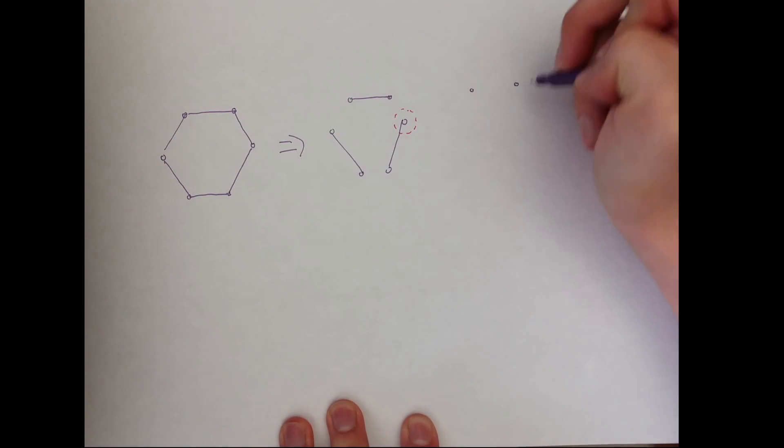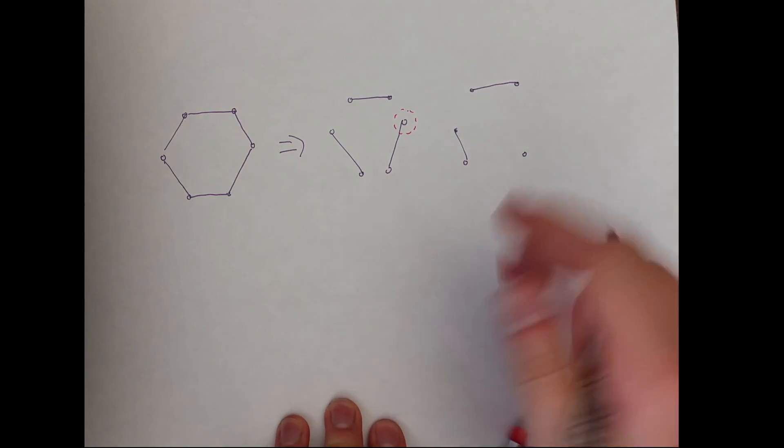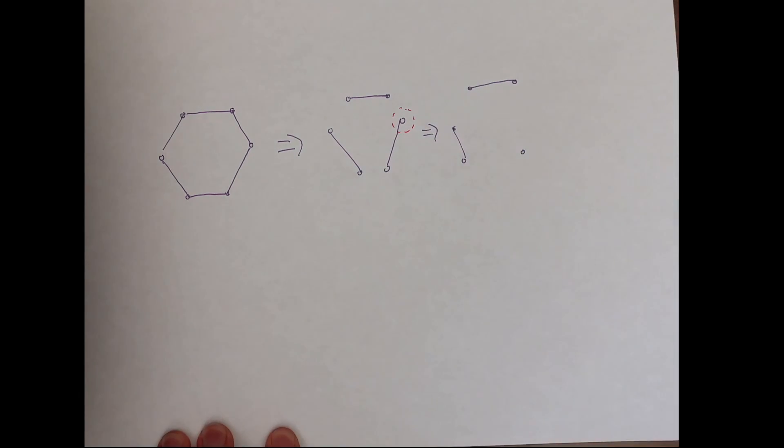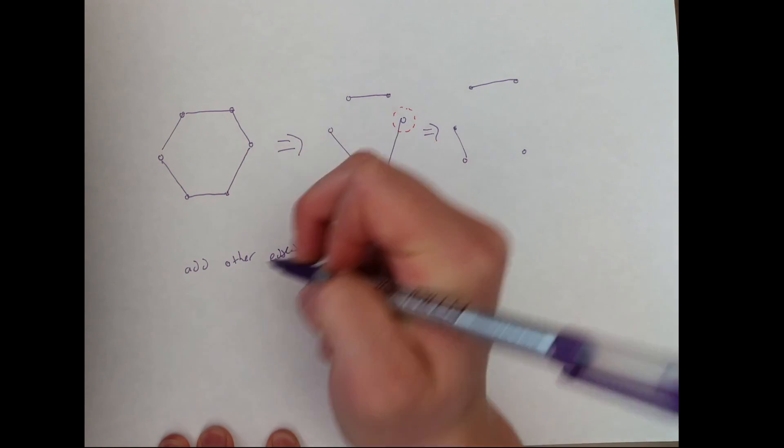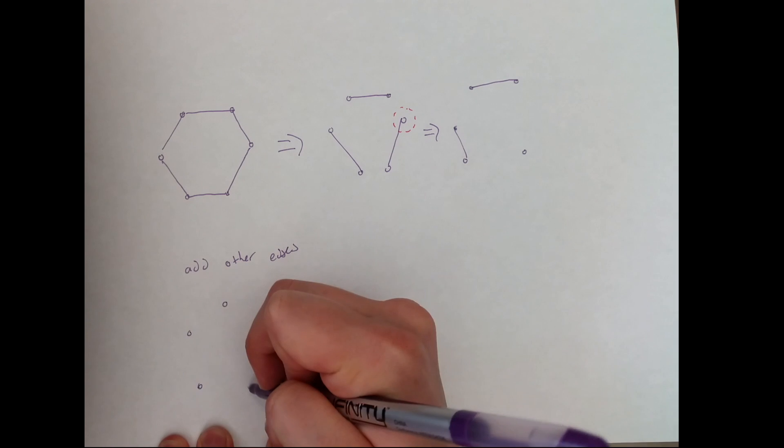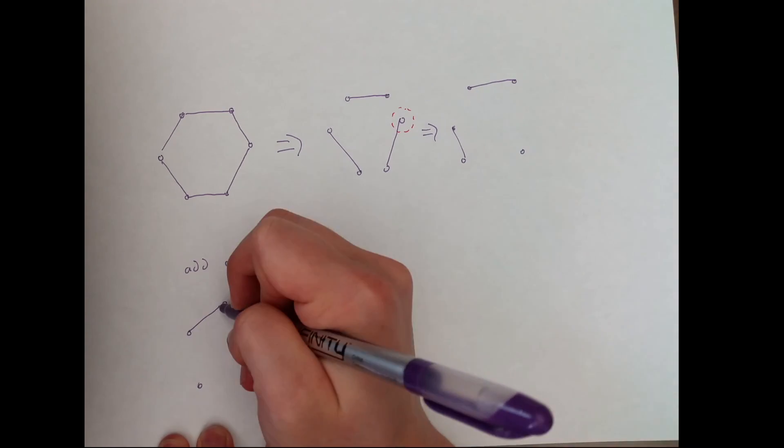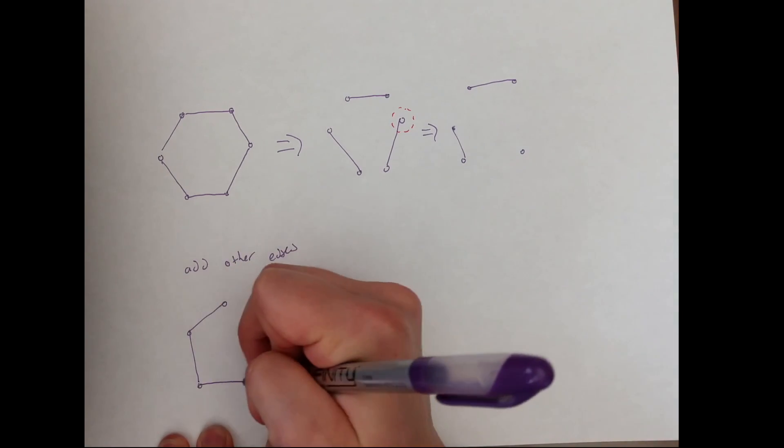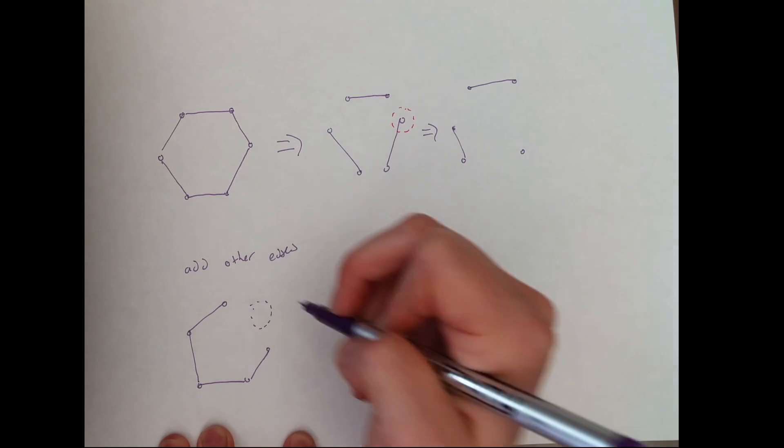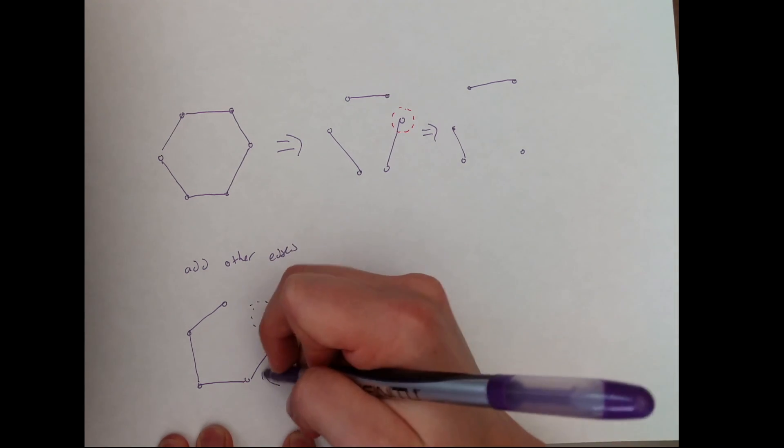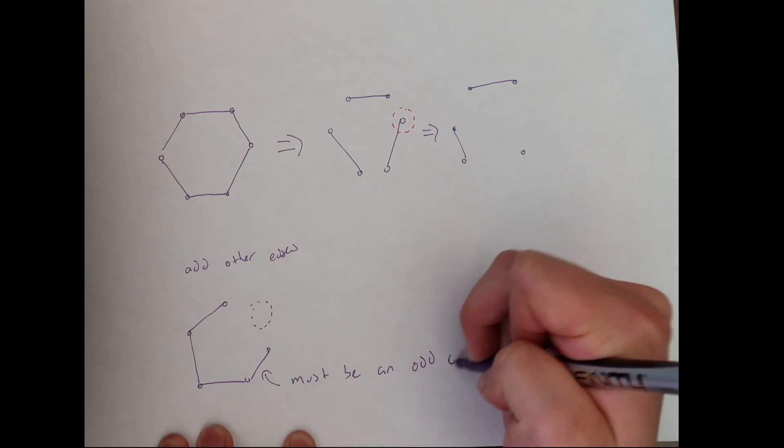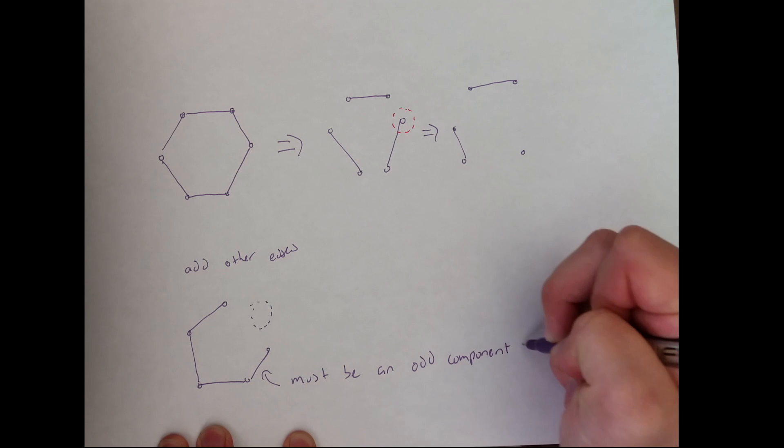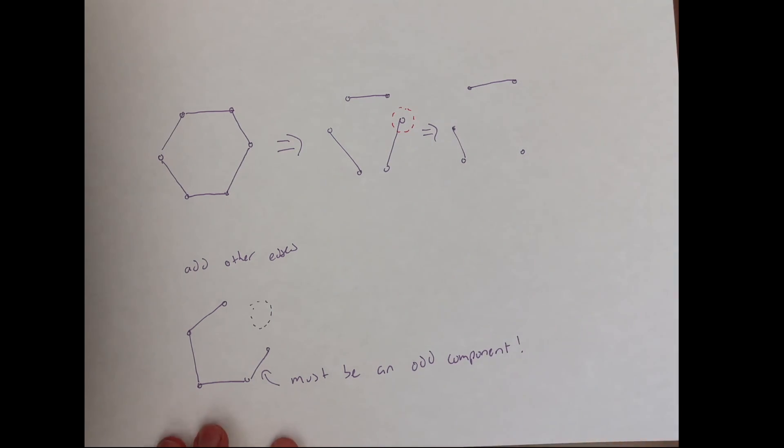Now imagine that you remove a point from the perfect matching. Now there will be one component which is odd, and the rest will be even. When you add back the edges of g which are not in the perfect matching, you will always connect pairs of even components, giving all components an even number of vertices, except for the component connected to the vertex which was originally paired with the vertex that was removed. Thus, the most odd components in a graph G from which you remove any number of vertices is the number of vertices that you initially removed.